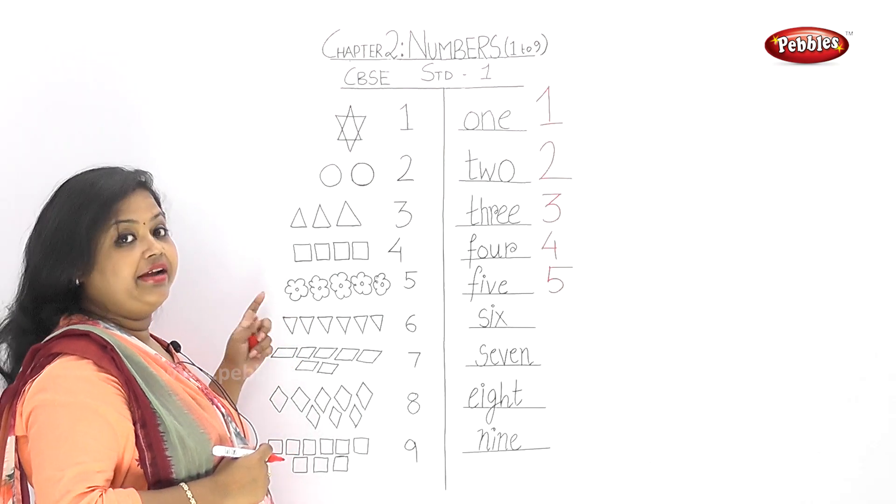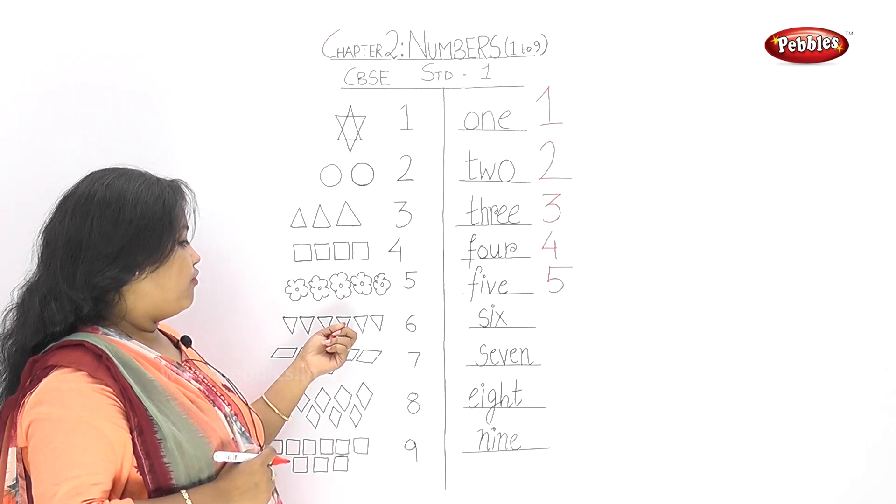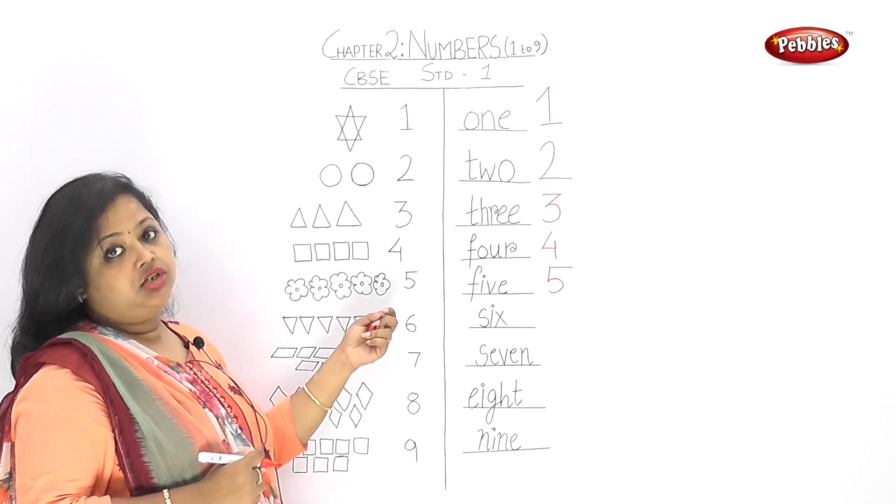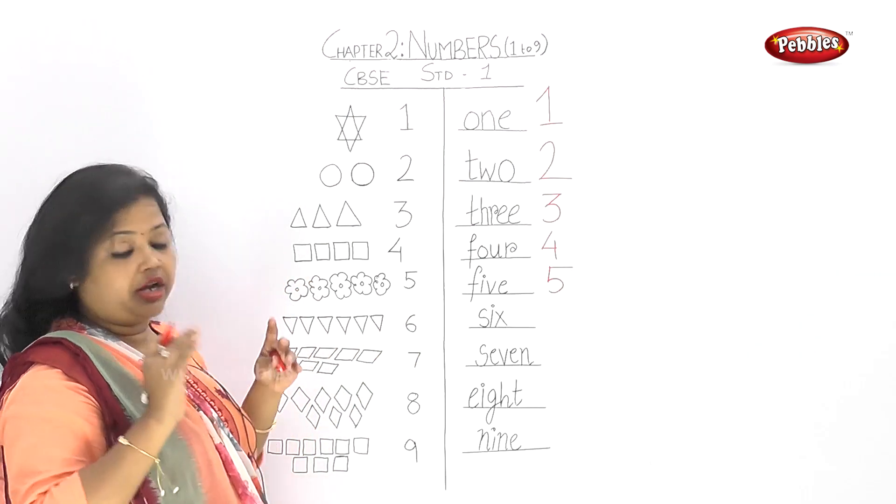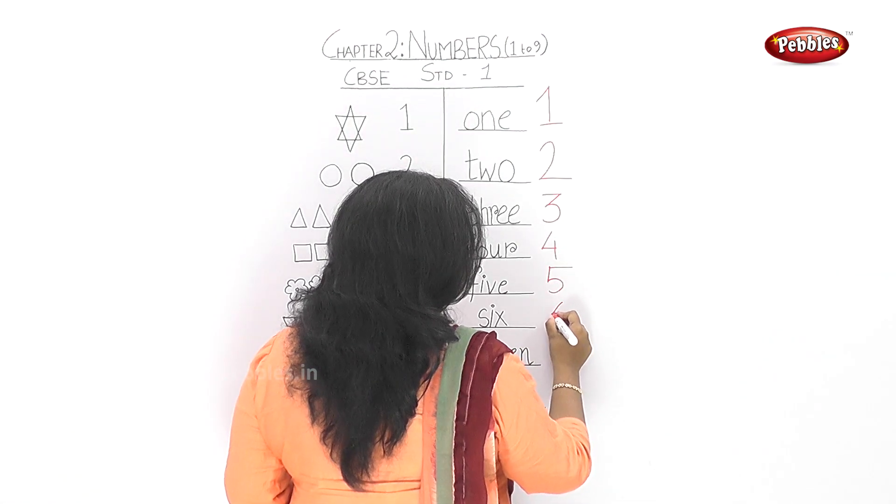Then again we have triangles, but upside down triangles. 1, 2, 3, 4, 5, 6. Six means small triangles. So let's write 6 here.